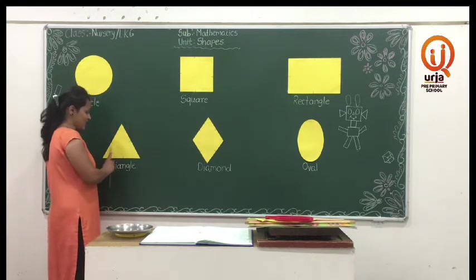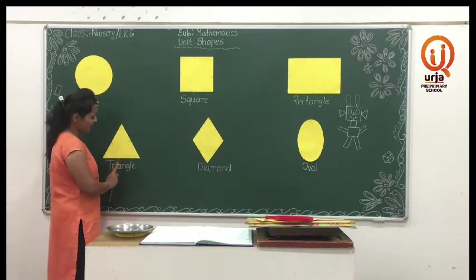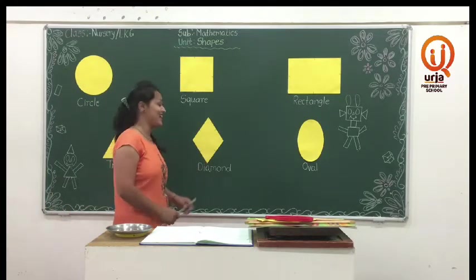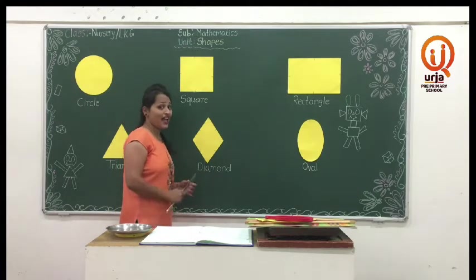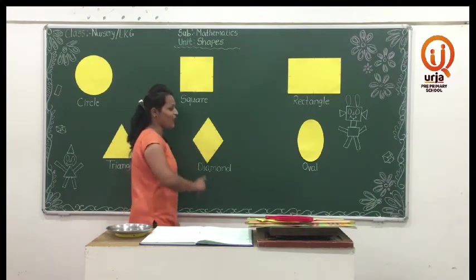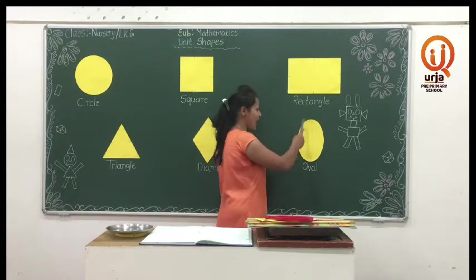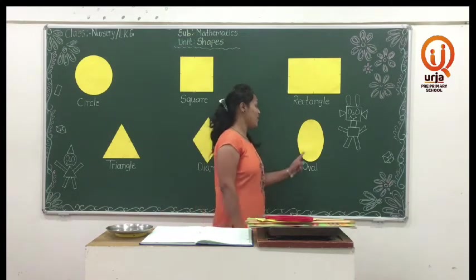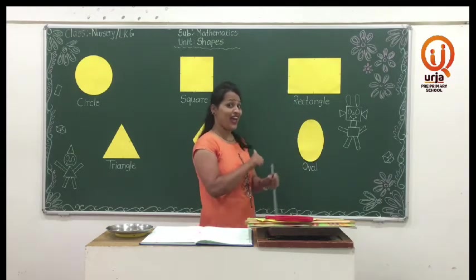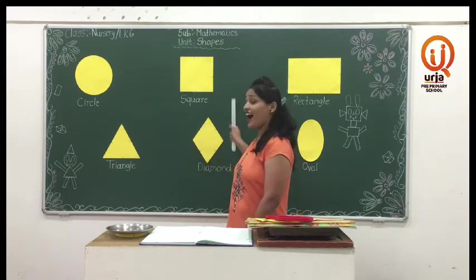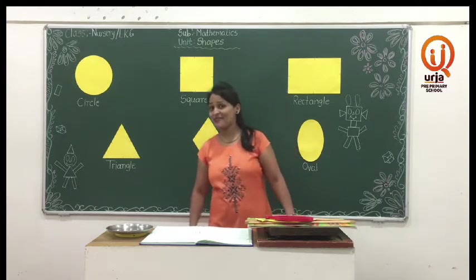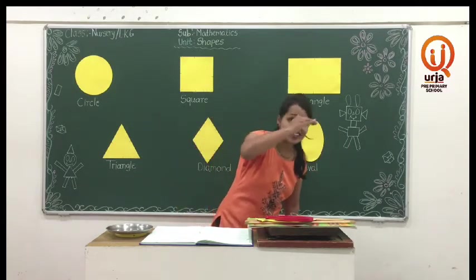I am a triangle, I have three sides. One, two, three. I am a diamond, I have four sides. One, two, three, four. I am an oval, I go round and round. I have no sides. We are shapes, we are everywhere. Just look around, we are everywhere.